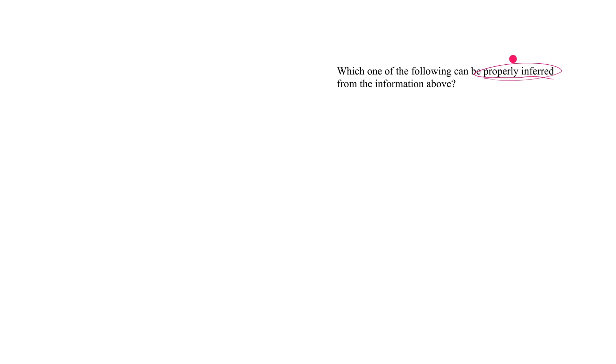What do they mean by 'properly inferred'? What they mean is must be true. Stated differently, that means if the information in the stimulus is true, the correct answer choice must be true.